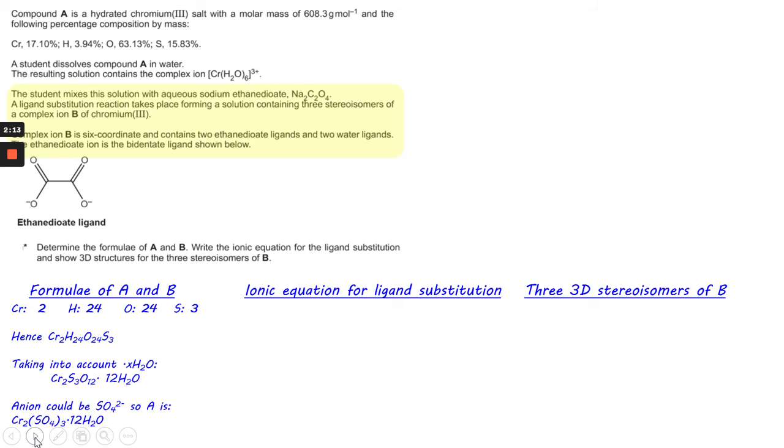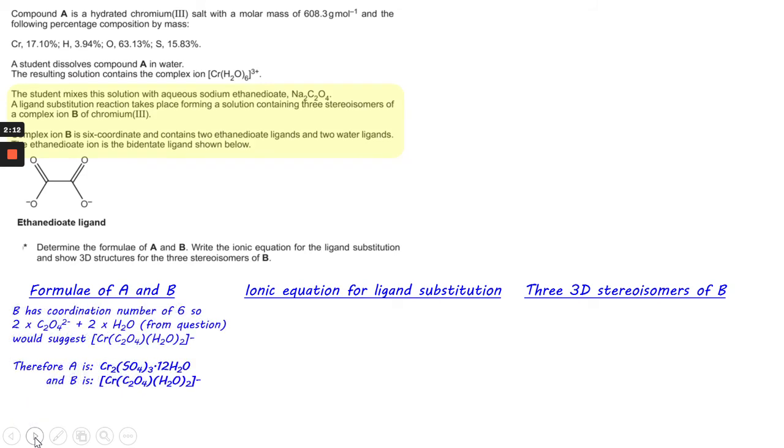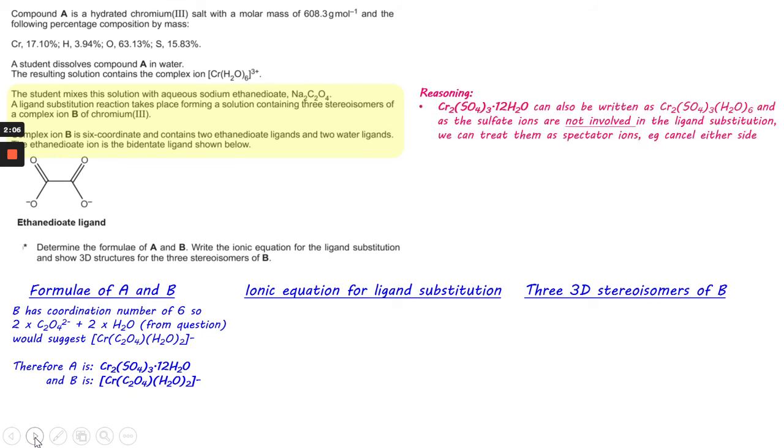The next part is to construct the ionic equation. Thinking about this, we know that Cr₂(SO₄)₃·12H₂O could be written to show [Cr(H₂O)₆]³⁺ ions. We're just leaving out the water of crystallization for now—we're interested in the anhydrous part of that salt, focusing on the complex ion.